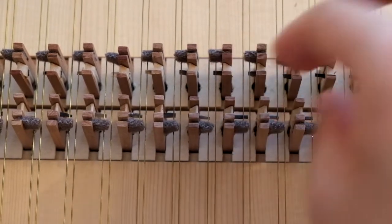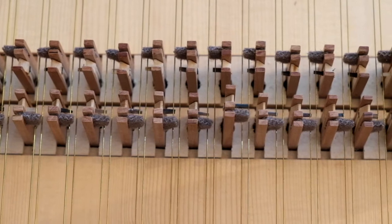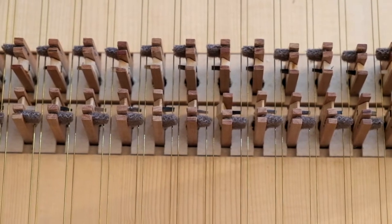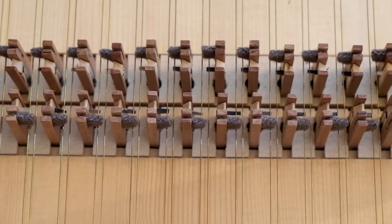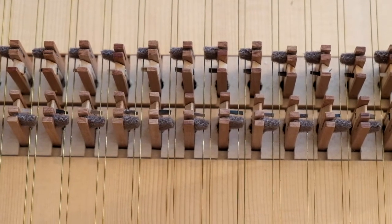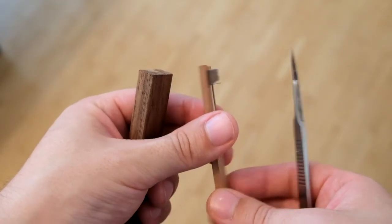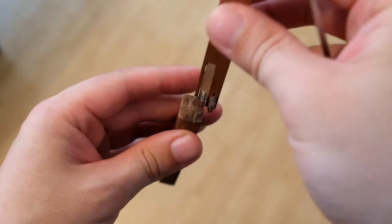With bird's quill there's much more room for error than with delrin plectra, so you can leave it longer than you might be used to. Playing the key, you will most likely notice that though the plectrum is still too strong, the jack returns properly already. If it doesn't, that means your plectrum is too long and you will need to cut it a bit shorter.